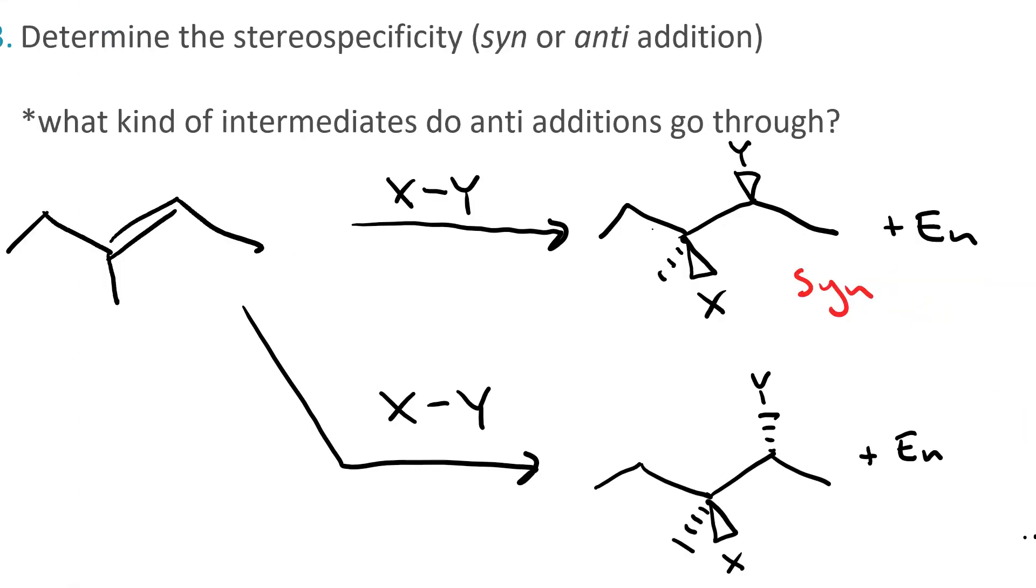In anti-addition, one adds on a wedge and the other on a dash. So one's added from the top and the other is added from the bottom. That's why it's anti. The enantiomer is also anti, where you would have X on a dash and Y on a wedge.